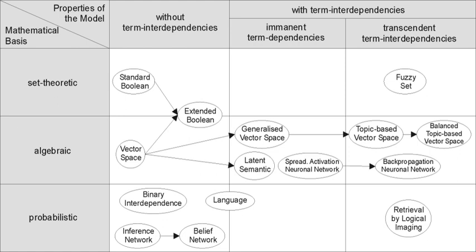In 1975, three highly influential publications by Salton fully articulated his vector processing framework and term discrimination model: "A Theory of Indexing" (Society for Industrial and Applied Mathematics), "A Theory of Term Importance in Automatic Text Analysis" (JASIS V. 26), and "A Vector Space Model for Automatic Indexing" (CACM 18:11). In 1978, the first ACM SIGIR conference was held. In 1979, C.J. Van Rijsbergen published Information Retrieval (Butterworth's), with heavy emphasis on probabilistic models.